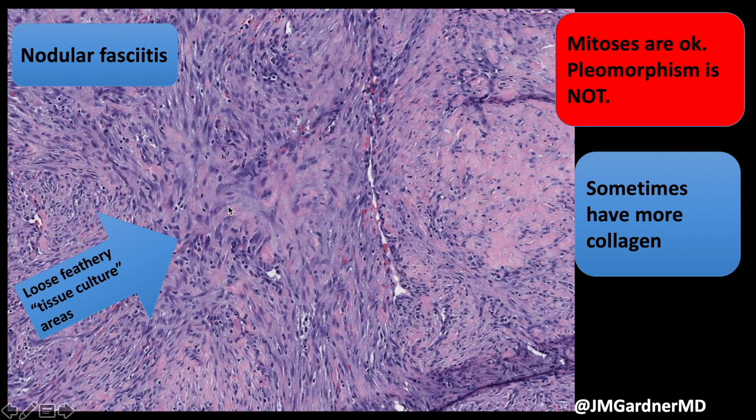Mitoses are often present and can sometimes be abundant, particularly in the more cellular early lesions of nodular fasciitis. However, you don't want to see hyperchromatic pleomorphic nuclei — that should really make you think twice about the diagnosis of nodular fasciitis.